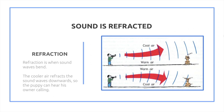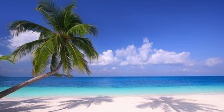Sound is also refracted, meaning it bends. Refraction is when sound waves bend. The cooler air in the picture to the right shows the refraction of sound waves downward, so the puppy can actually hear his owner calling him in the cooler air.